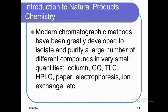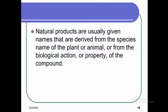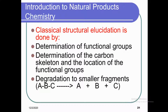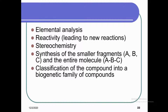Modern chromatographic methods have been greatly developed to isolate and purify a large number of different compounds in very small quantities — column chromatography, GC, TLC, HPLC, paper electrophoresis, ion exchange, etc. Natural products are usually given names derived from the species name of the plant or animal, or from the biological action of the compound. Classical structural elucidation involves determination of functional groups, determination of the carbon skeleton and location of functional groups, degradation to similar fragments, elemental analysis, reactivity studies, stereochemistry, and synthesis of similar fragments and the entire molecule, as well as classification into a biogenetic family of compounds.